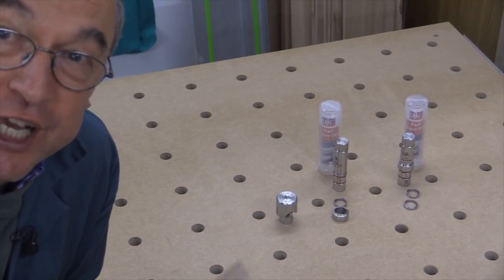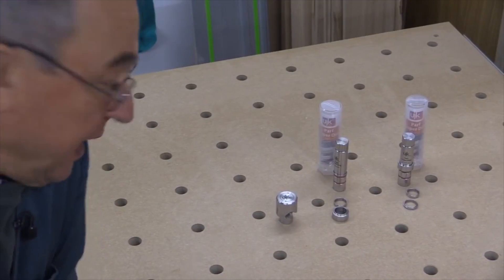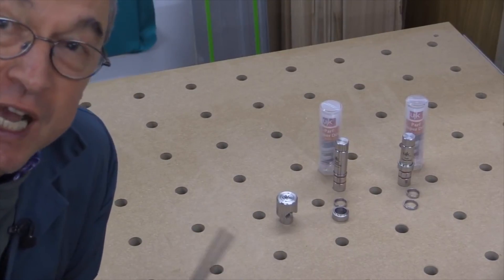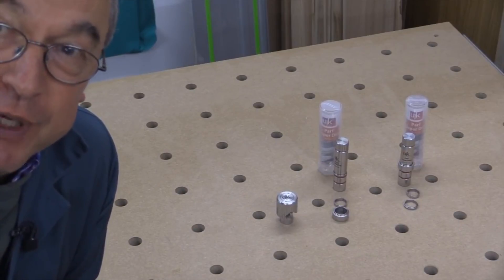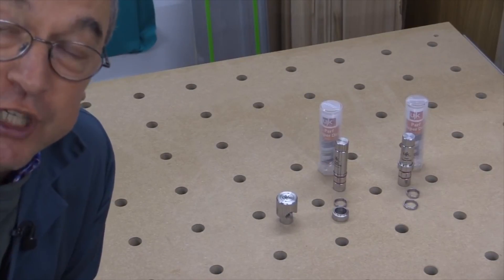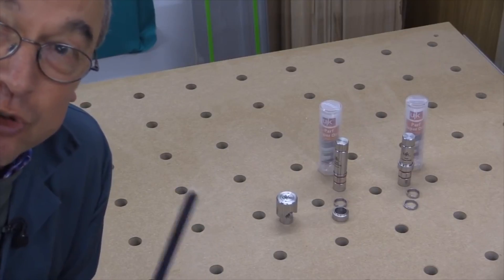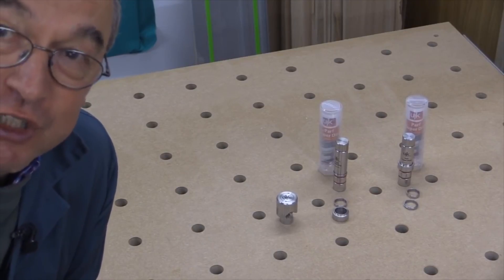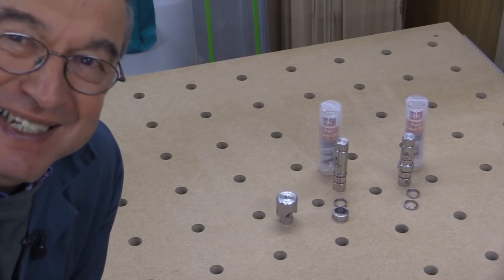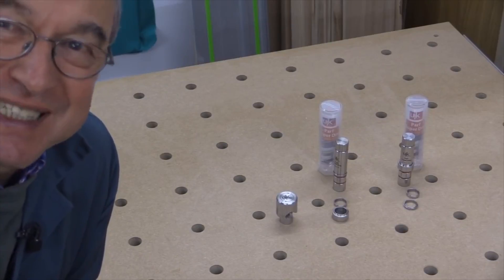So there you have the UJK Parf Superdog and the optional chamfer cutter. And this is a tool that I see being used in all sorts of jig work and also with your track saw on a custom cutting station made with a Parf guide system. Thank you very much for watching. Take care. Bye-bye.